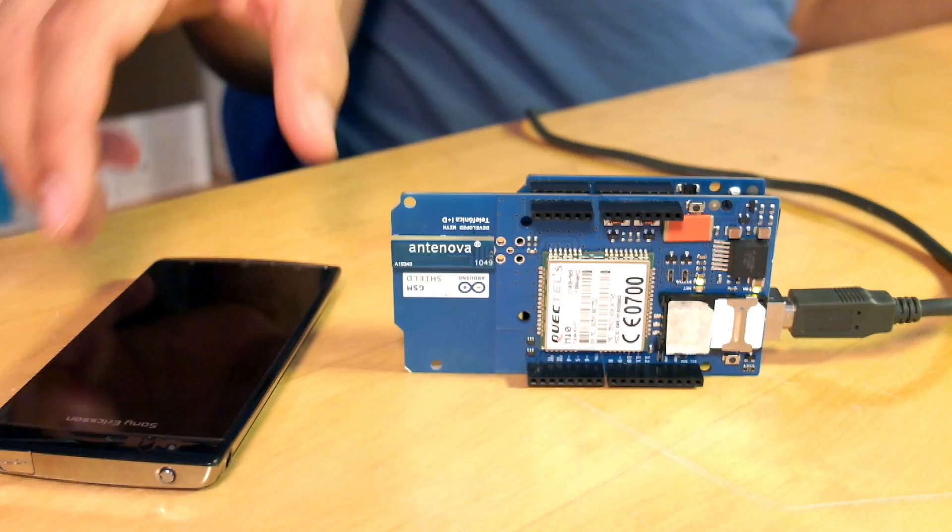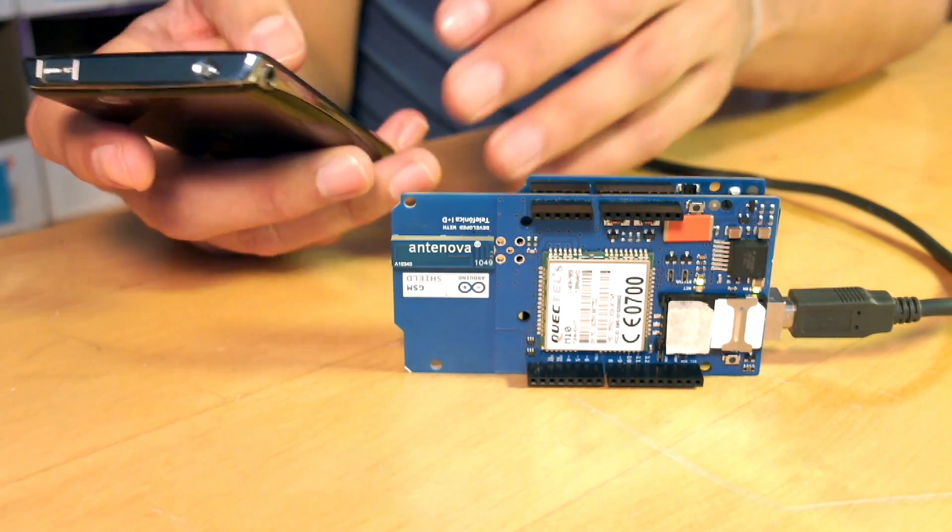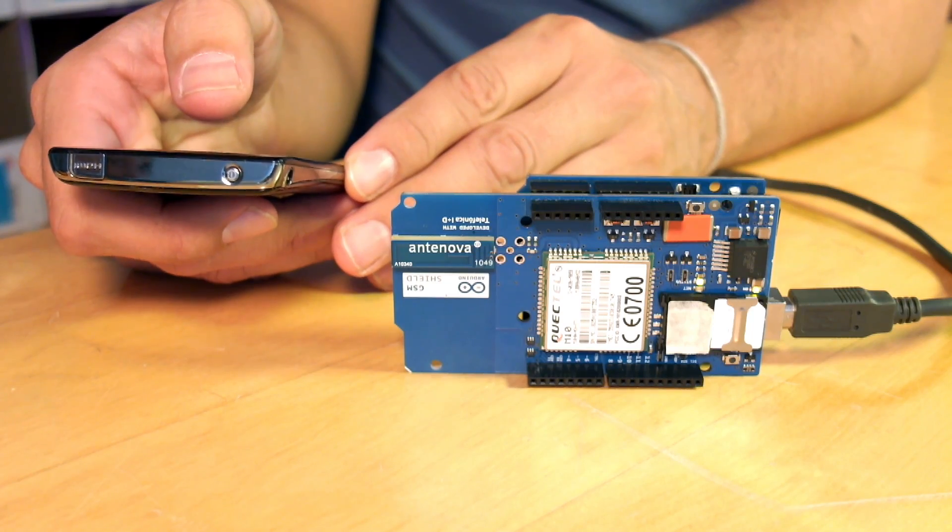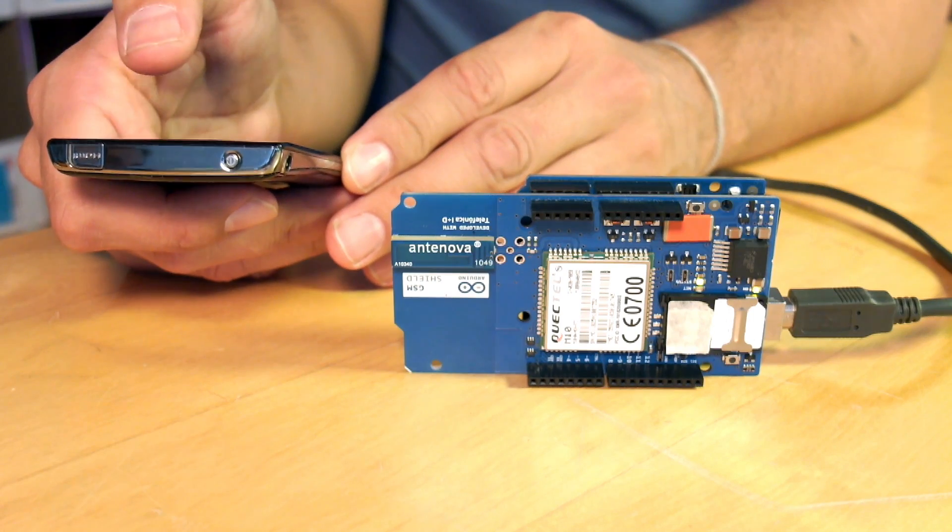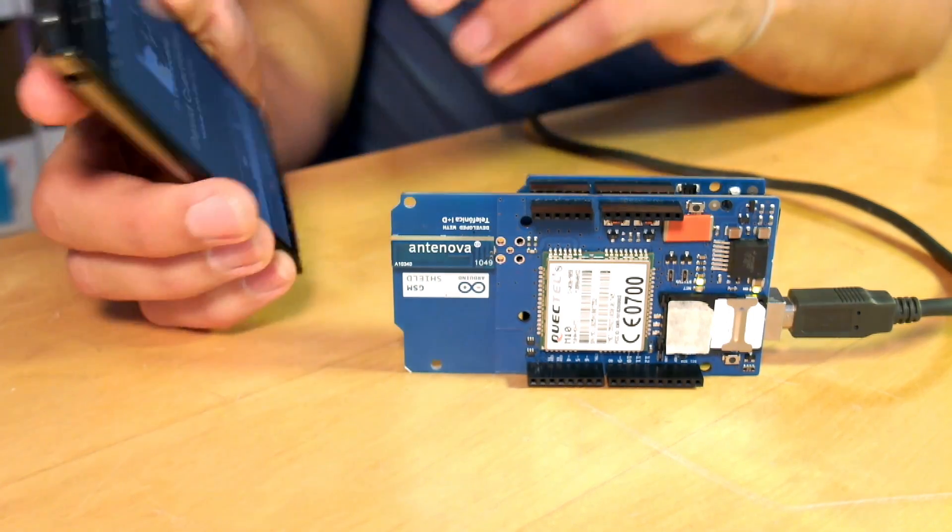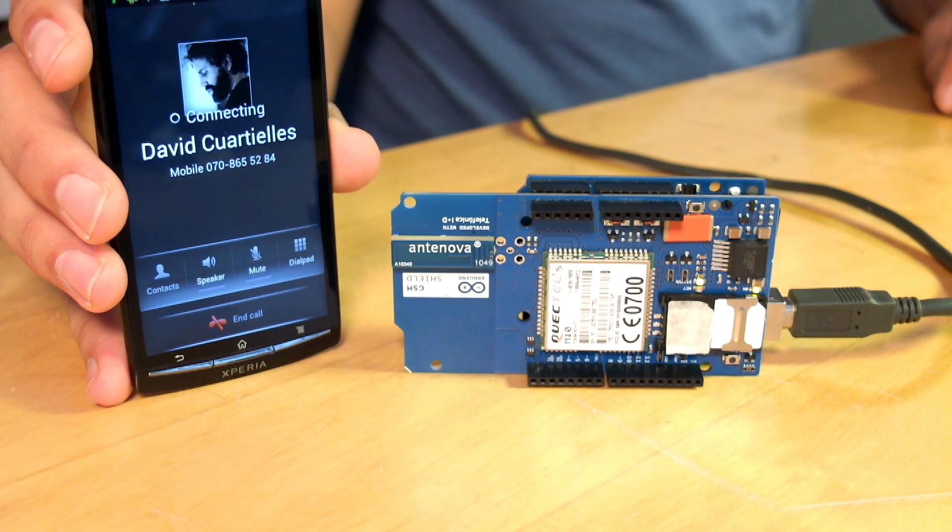So, while the program loads, I will just interact with my phone in order to set up a call back to the shield as we have it configured. So, I'm now calling the shield.